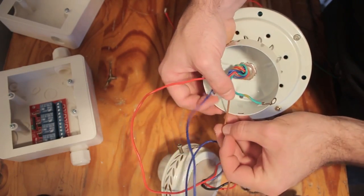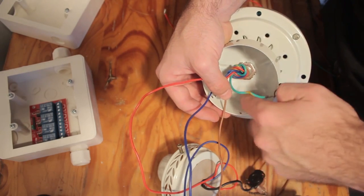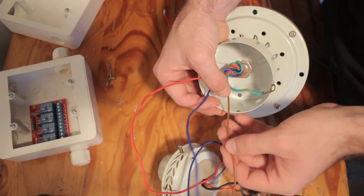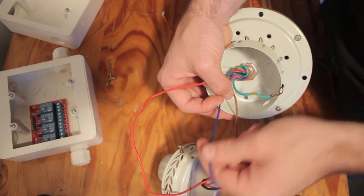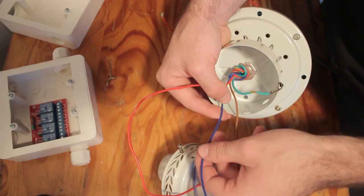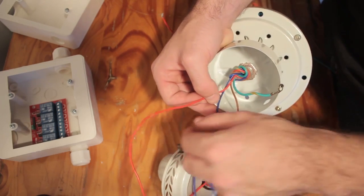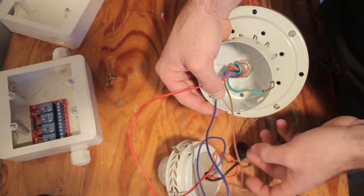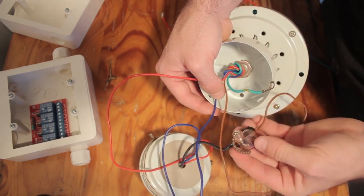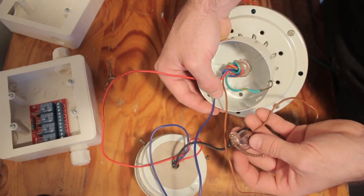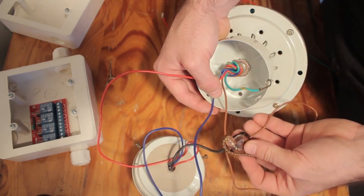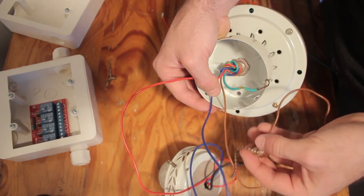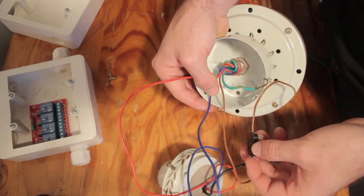So now coming out of the light, you can see, if you look at the end here, there is a red, a blue, and a brown and a ground. So the ground gets attached to the ground screw, which is over there. The brown is always on power. The blue is always neutral. And the red is the relay on and off of the light.